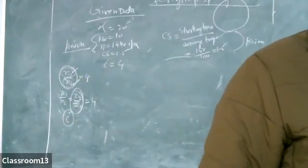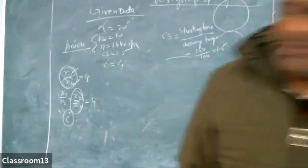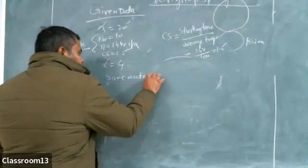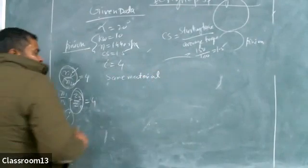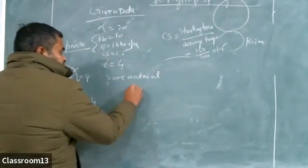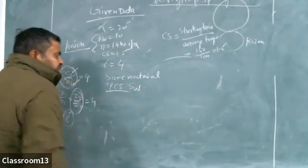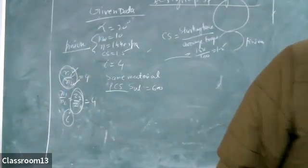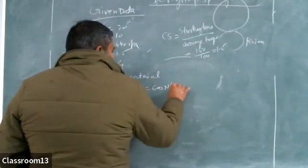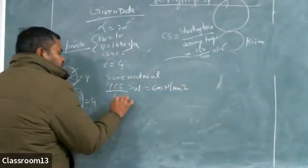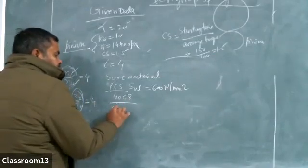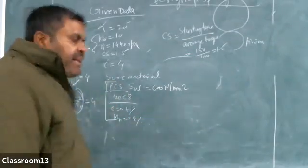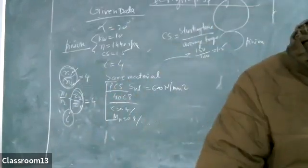Both the pinion and the gear are made of plain carbon steel 40C8. The ultimate tensile strength SUT is 600 N/mm². The material is the same for both pinion and gear.